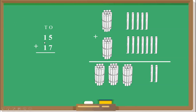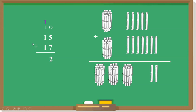The same thing we do with the numbers. At the 1's place we have 5 and 7. Adding 5 and 7 gives 12. But this 1 is at the 10's place and this is the 1's place, so we cannot write two numbers here. So we move this 1 to the 10's place.